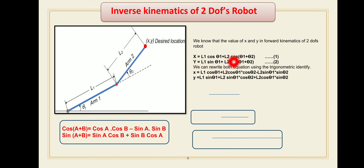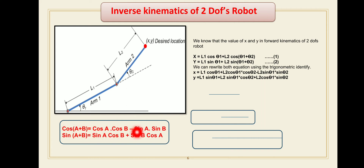For the y component, y = L1·sinθ1 + L2·sin(θ1 + θ2), we expand sin(θ1 + θ2) using the identity sin(A + B) = sinA·cosB + cosA·sinB. So we can rewrite both equations using these trigonometric identities.